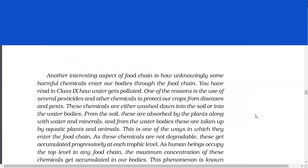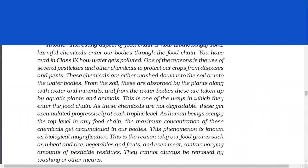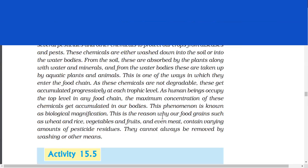Another interesting aspect of food chain is how unknowingly some harmful chemicals enter our bodies through the food chain. You have read in class 9 how water gets polluted. One of the reasons is the use of several pesticides and other chemicals to protect our crops from diseases and pests. These chemicals are either washed down into the soil or into the water bodies. From the soil, these are absorbed by the plants along with water and minerals. And from the water bodies, these are taken up by aquatic plants and animals. This is one of the ways in which they enter the food chain. As these chemicals are not degraded, these get accumulated progressively at each trophic level.